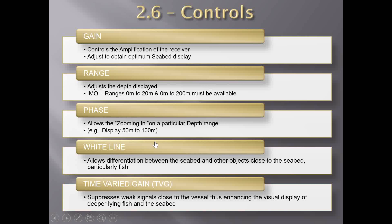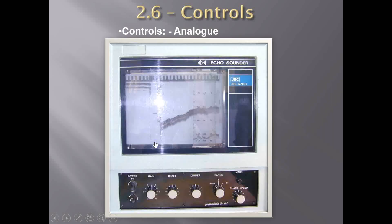The time varied gain switch operates like a radar's sea clutter control. It enables weak echoes at very short range to be suppressed without affecting deeper fish and seabed echoes. This way the display remains clearer and unnecessary clutter is suppressed.